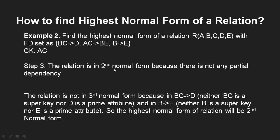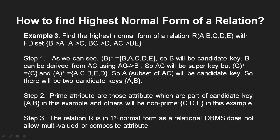Checking third normal form: a relation is in third normal form if either the left-hand side is a key or the right-hand side is a prime attribute. Here the left-hand side is not a key and the right-hand side is not a prime attribute, so this FD does not satisfy third normal form. Therefore the highest normal form for this example is second normal form.